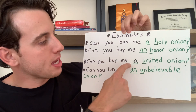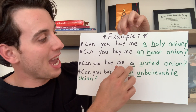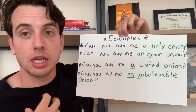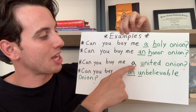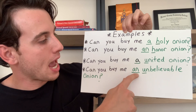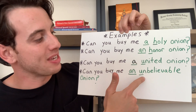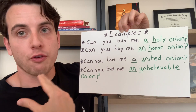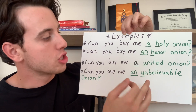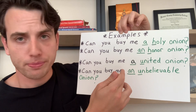Can you buy me a united onion? The reason we use 'a' is because in the word 'united,' we're using the Y sound, which is a consonant, so we use 'a.' And the last example: can you buy me an unbelievable onion? Again, two adjectives that both begin with U but with different pronunciations — 'yoo' and 'uh.' This is the 'uh' vowel sound, therefore we use 'an.'